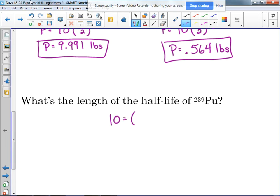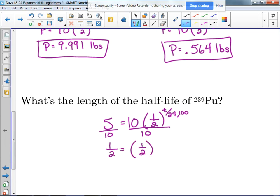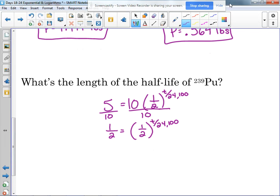So if we started with 10, we're talking about the half-life, we're going to have five pounds of it. We're looking for T. So kind of like we did with our interest problems, divide by 10, we get one-half is equal to one-half to the T over 24,100. If we have the same base, what do we do? We set the exponents equal. So we set the exponents equal to each other.